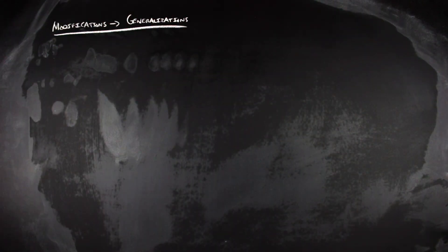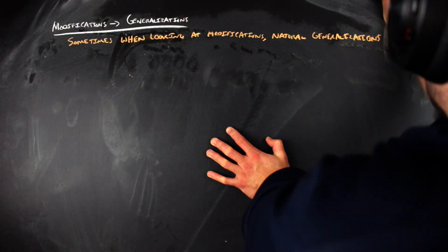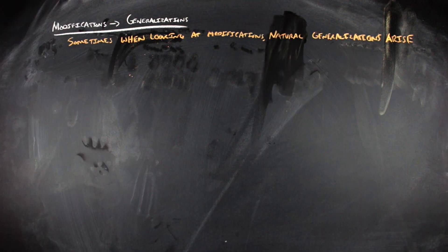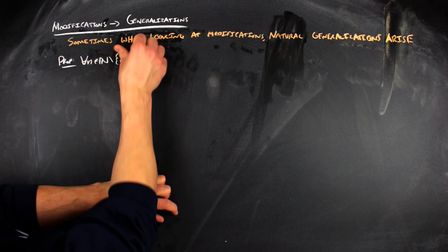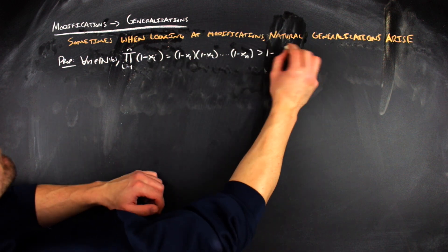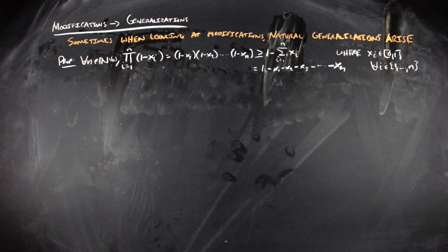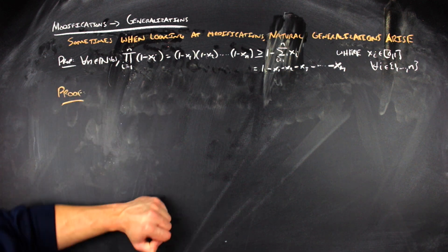As we can see with this set of modifications to get to the original problem, we can also look at the original problem and, based on the modified arguments and the argument we had at the end for the original proposition, there is a natural way to generalize this problem as well. We can generalize this to a 'for all' statement for all natural numbers, where you take the product of n terms of that particular form, and you get that this is greater than or equal to 1 minus the sum of those things that you subtracted in each term, where each subtracted value is in the closed interval from 0 to 1. The base case we already did while doing our modified arguments.